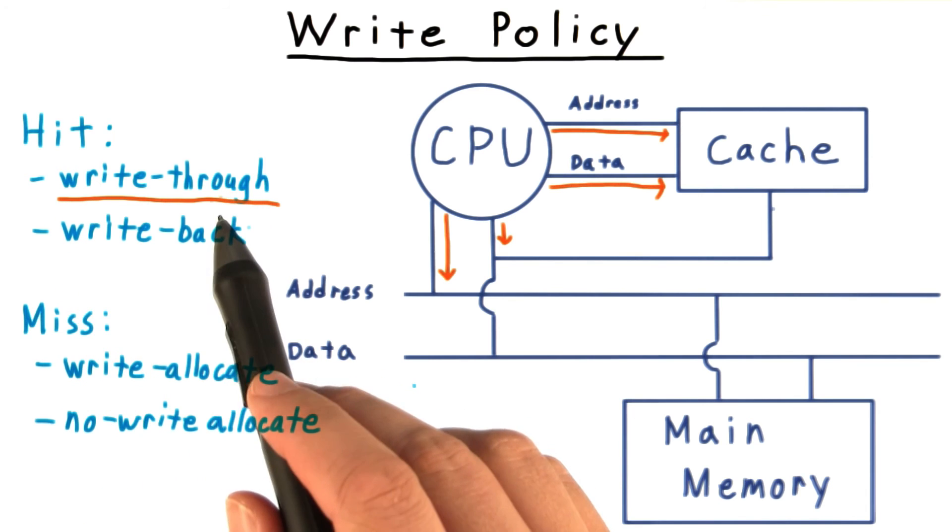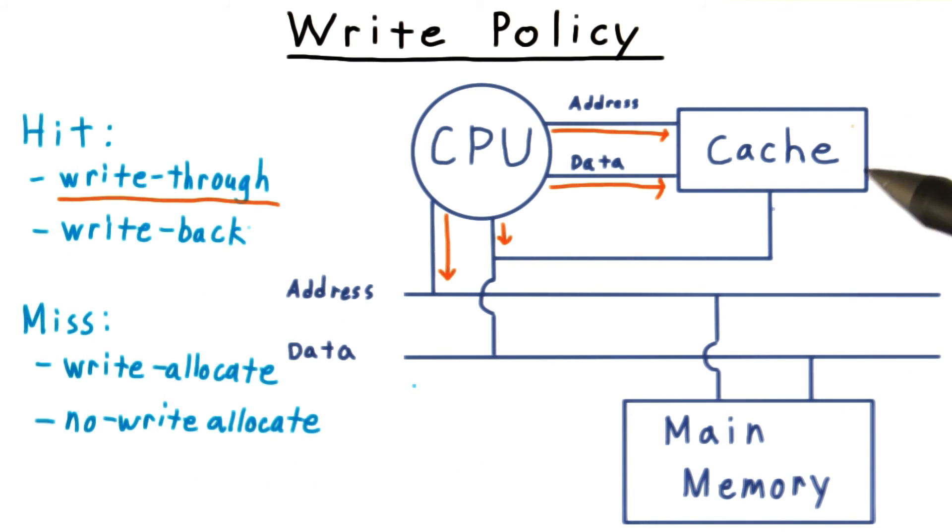On the other hand, write-through is betting on the cache block being evicted sooner rather than later. It does writes to memory up front, so that it can quickly evict the block from the cache later if necessary, not having to worry about any writes to disk.